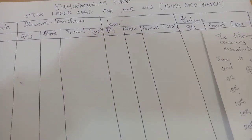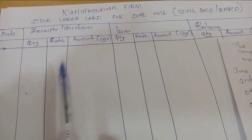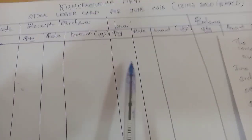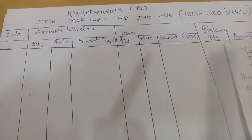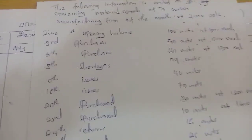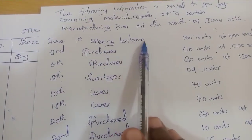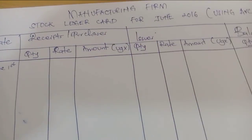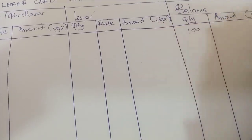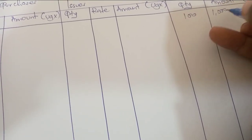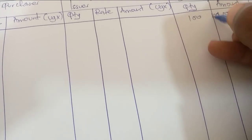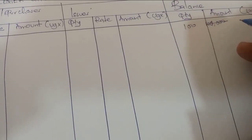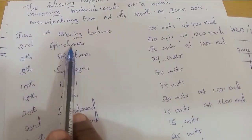The AVICO method and FIFO method only apply to issues. For receipts and purchases we rate them as they are. It's only for issues that we apply those methods — first in first out, average cost, and so on. June 1st: opening balance of 100 units at 1,000 each. It's not a receipt and not an issue — it is a balance. So 100 units at 1,000 each equals 100,000.